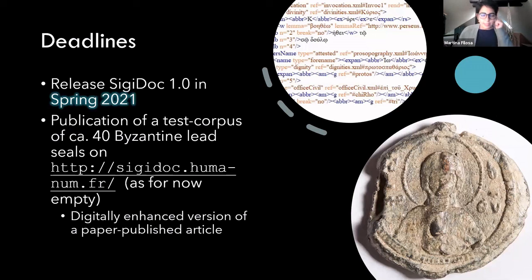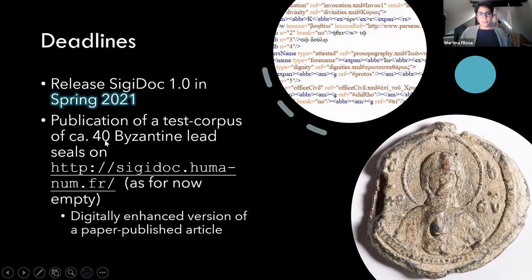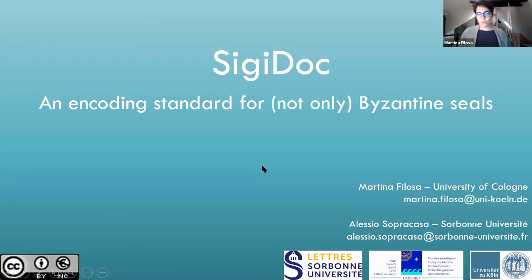Just to wrap up with a couple of deadlines: SigiDoc is in its beta version and the release is planned for spring 2021. We also had a couple of setbacks as far as projects are concerned. Along with the release of SigiDoc 1.0, there will be the publication of a test corpus of circa 40 Byzantine lead seals on this website, which is as for now empty.